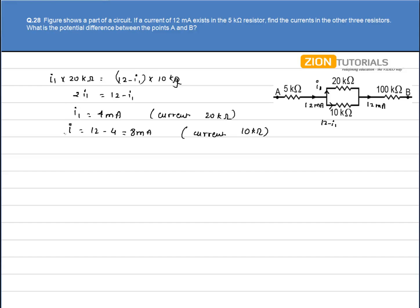Obviously, both of them will be added up to give the current in the 100kΩ resistance. So we have it as 12mA.